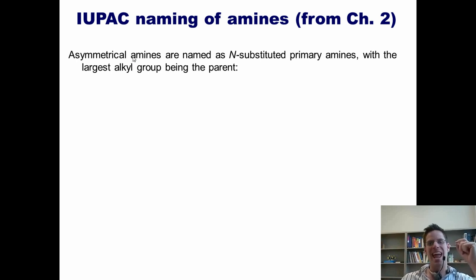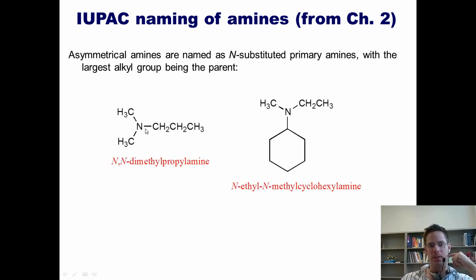Asymmetric amines are named as N-substituted primary amines with the largest alkyl group being considered the parent chain. So let's look at this example here. The longest alkyl group that includes the nitrogen is this propyl group. If this nitrogen were not stuck to these two methyl groups, then the name of this compound would be called propylamine. So that is the parent group. Because this nitrogen is stuck to two alkyl groups, we call it N,N-dimethylpropylamine. The two Ns indicate that these two methyls are stuck to the nitrogen. In this example at right, you can see that the longest chain is the cyclohexylamine. So that is the parent chain. And then you'll see that this nitrogen is stuck to a methyl and to an ethyl. We put those in the name alphabetically. So I thus name it by saying N-ethyl-N-methyl-cyclohexylamine.